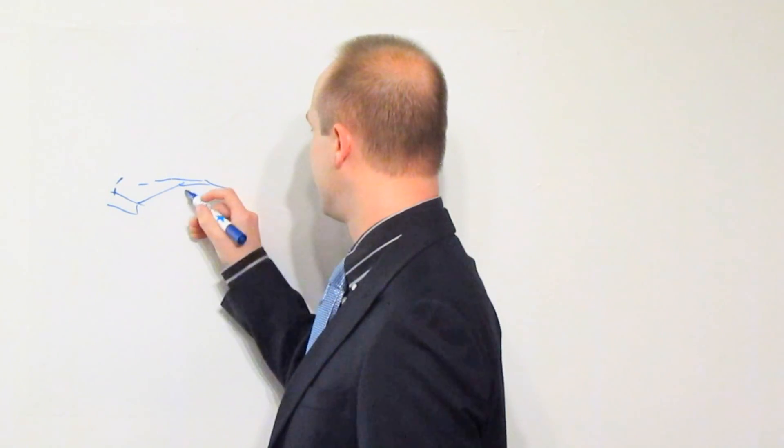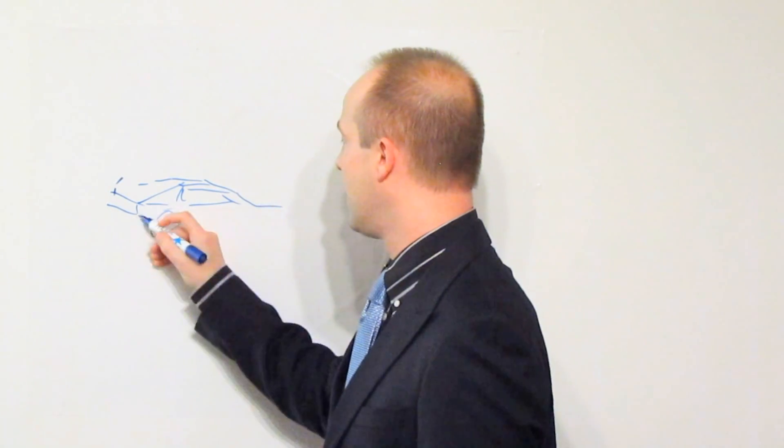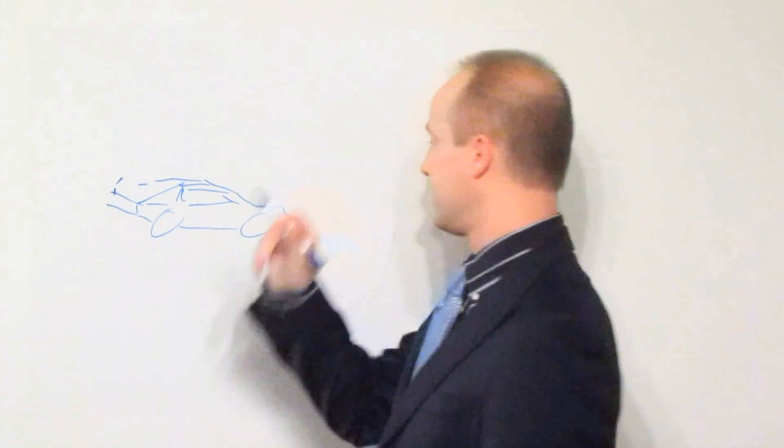So here's my car. This is going to represent that individual electron as it moves through our circuit. There we go. Now we need something to represent the circuit, we need something to represent the wire which this electron is moving through. So let's add a road.